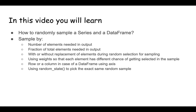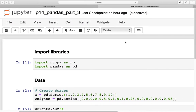After that, we'll look at how we can use weights for each element to sample. Finally, in DataFrames we'll look at how to randomly sample either rows or columns, and then we'll also look at how to use random state to lock in the random samples that we get. Let's get started in Jupyter Notebook.